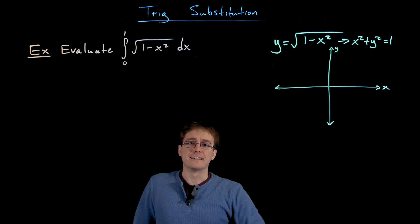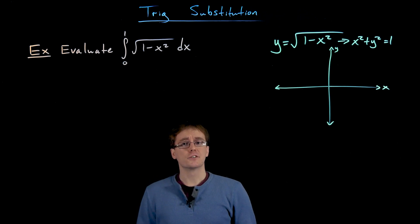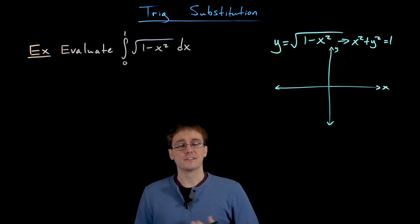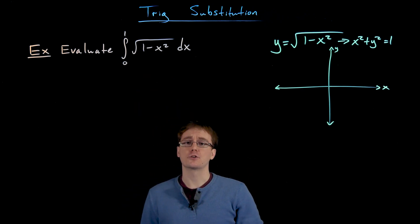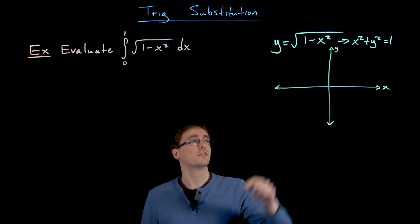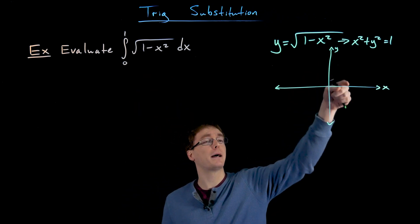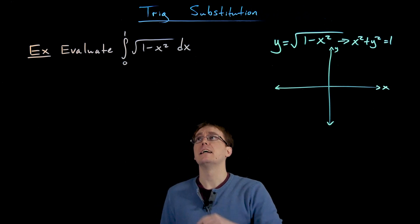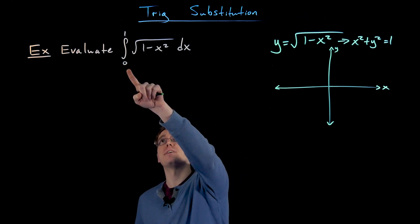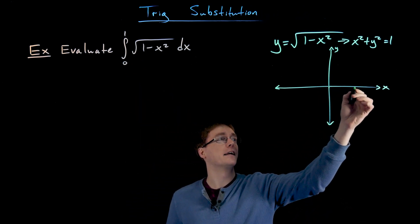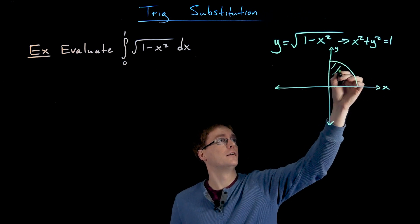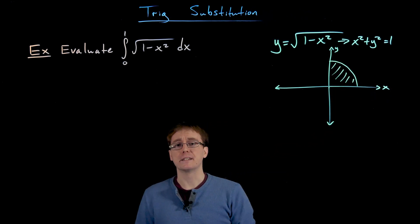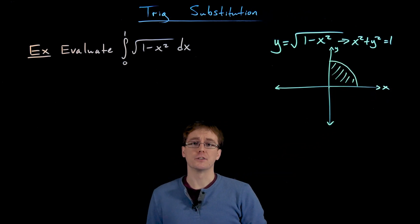Our integral is not describing the entire unit circle. We have y equal to the positive square root of 1 minus x squared, so that's describing the top half of our unit circle. But it's only for x values between 0 and 1, so it's really just describing this quarter piece of our unit circle.